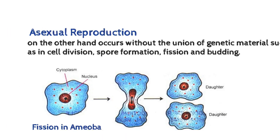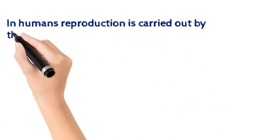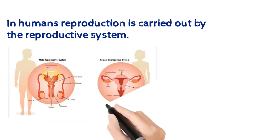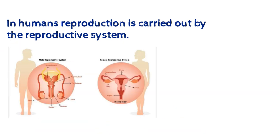In humans, reproduction is carried out by the reproductive system. This system is quite different in the male and in the female organisms. Special organs are responsible for the production of gametes, which you can also call the sex cells. So every time I talk about gametes in this topic, what should come into your mind is that I am talking about the sex cells.